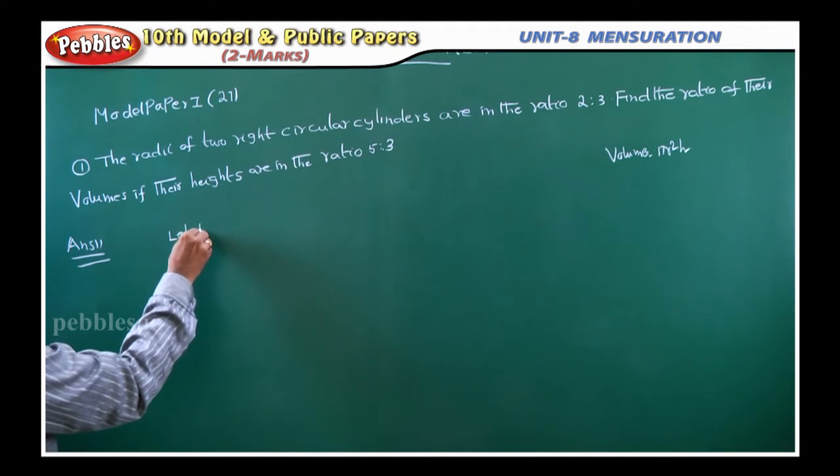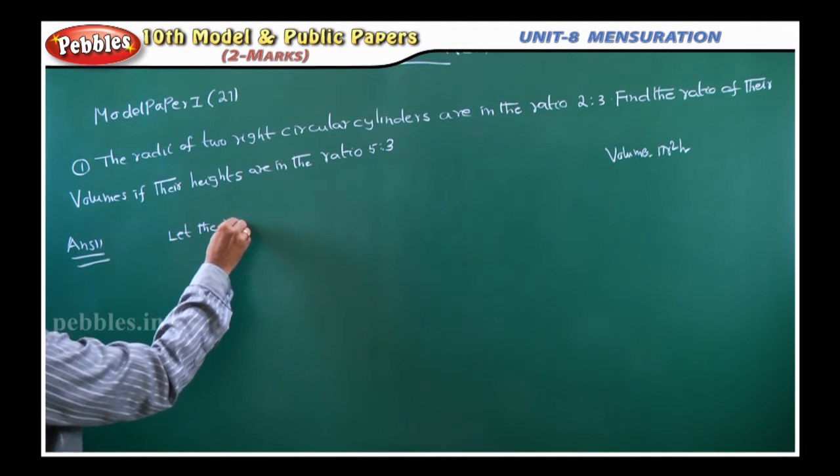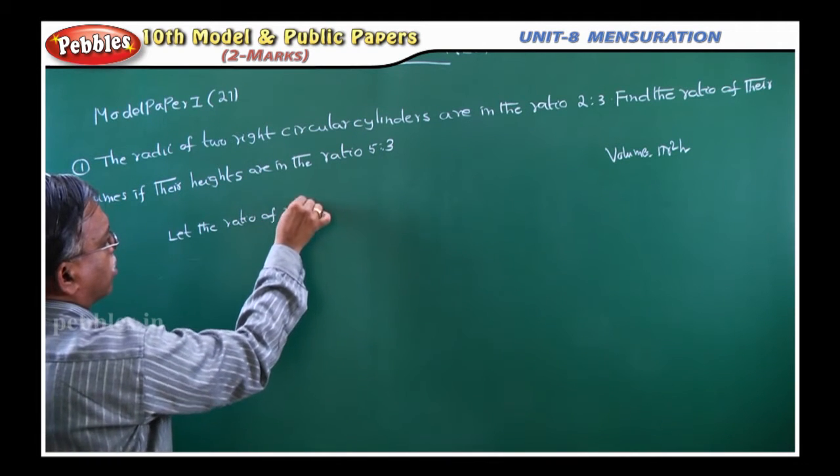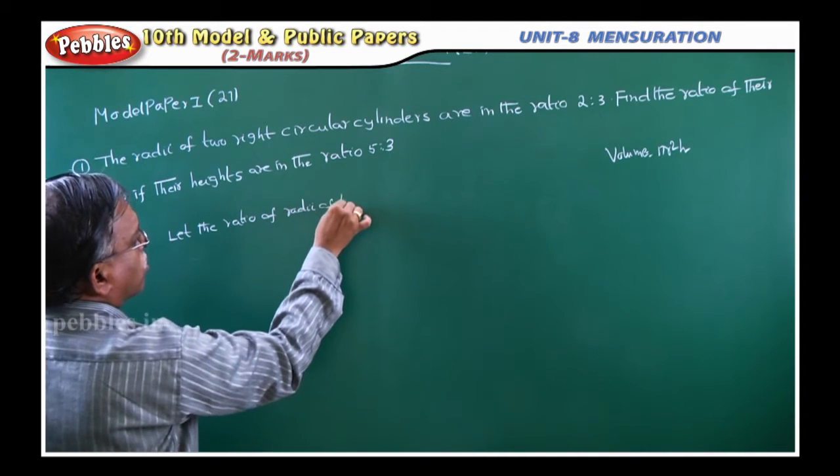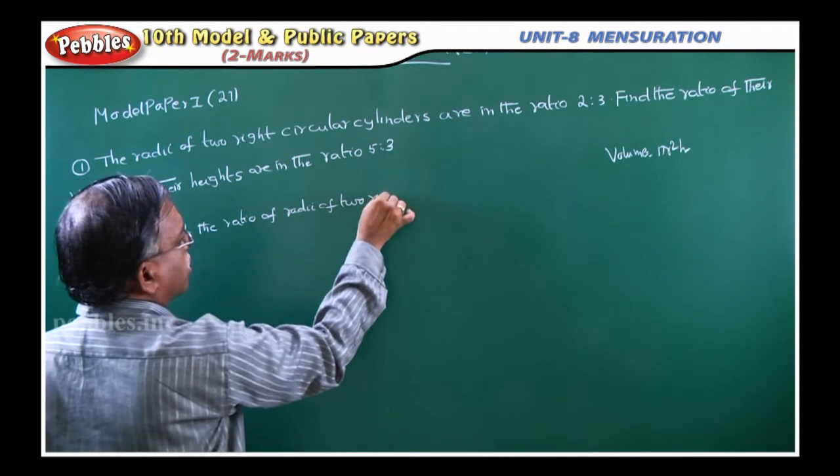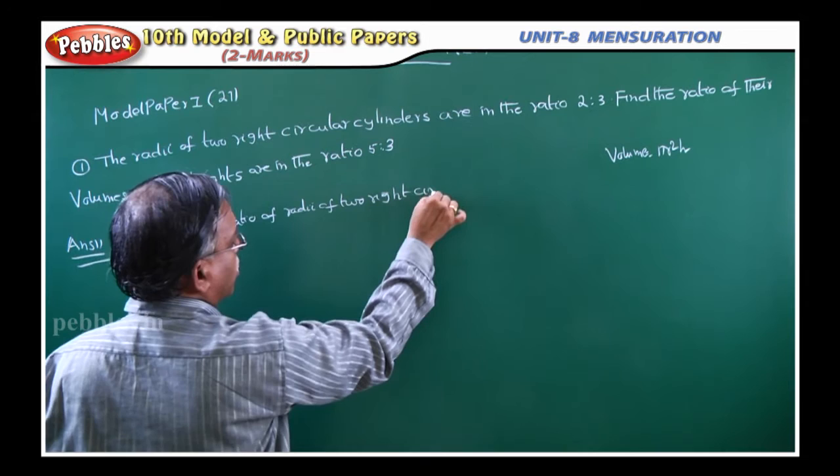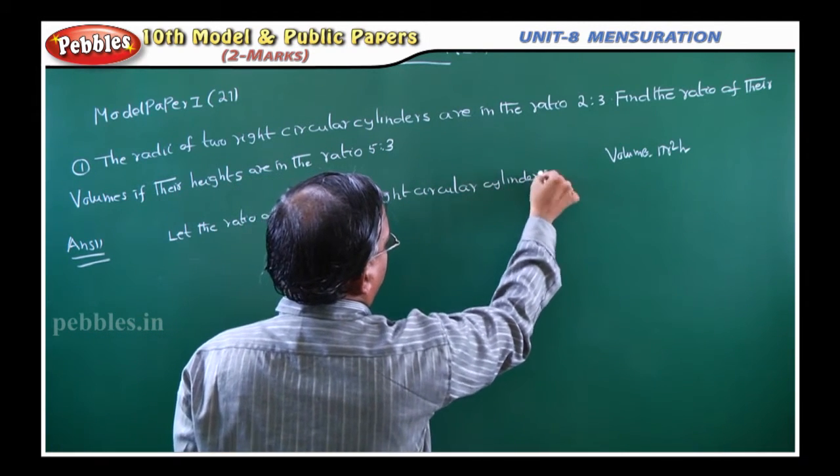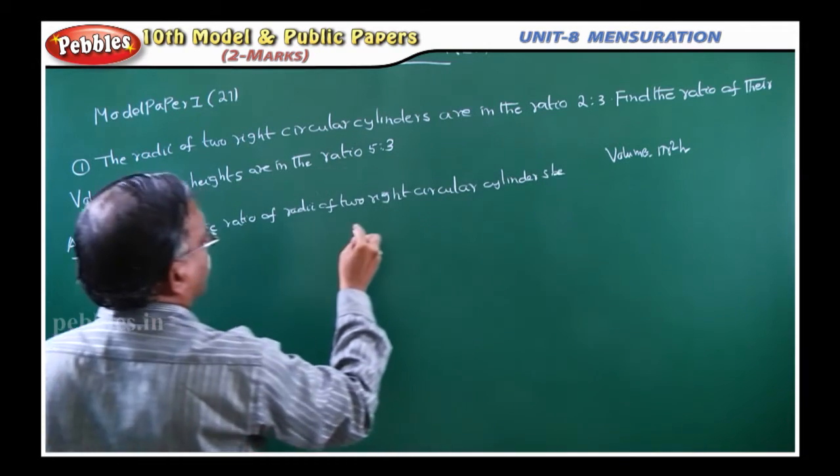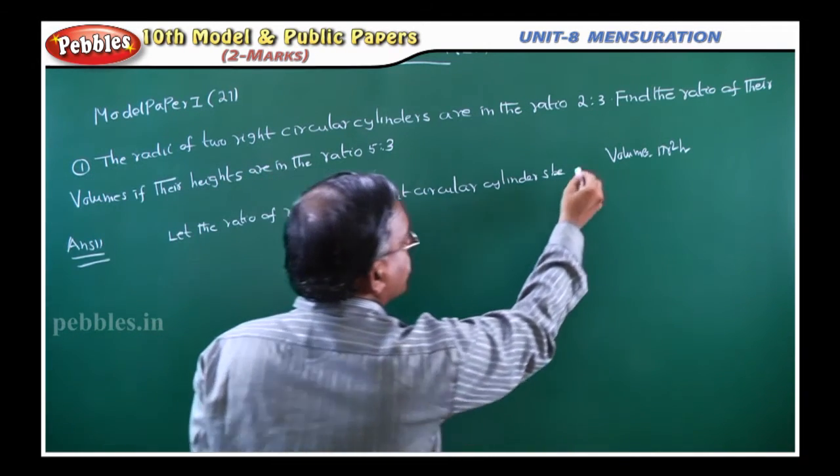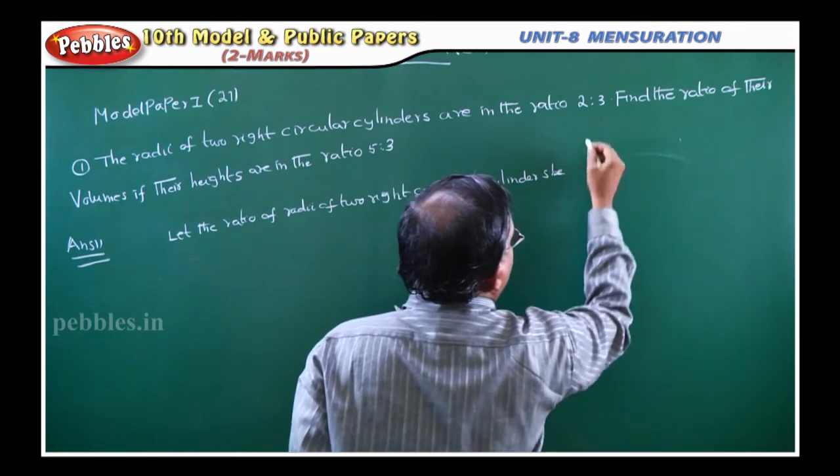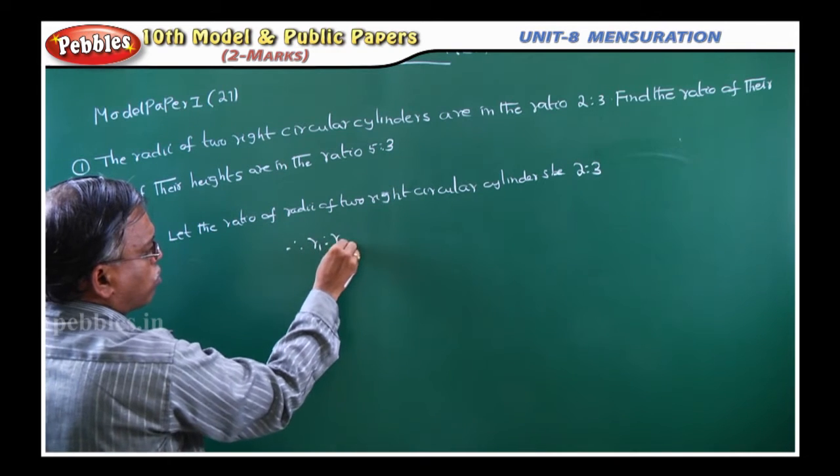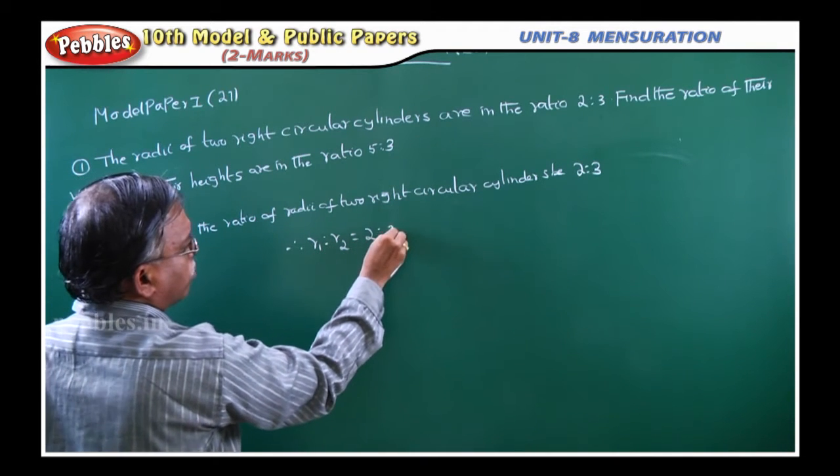Let the ratio of radii of two right circular cylinders be 2 is to 3. Therefore, r1 is to r2 is equal to 2 is to 3.